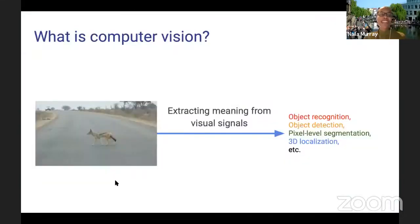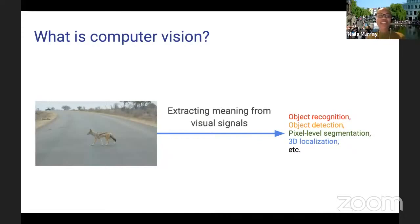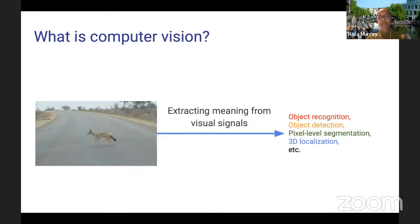What is computer vision? Given some kind of visual signal — an image or a video stream — how can I extract meaning from that signal? How can I do things like recognize objects, detect objects, segment the image into different regions in terms of their semantic content?